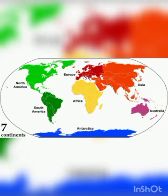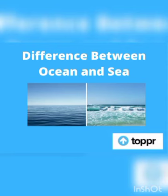What is the difference between seas and oceans? Oceans are very large and deep areas of water. At the same time, seas are smaller areas of water. Some important seas are the Mediterranean Sea, Arabian Sea, Black Sea, and South China Sea.